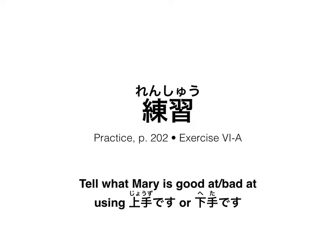Alright, let's get a little practice in. This is taken from page 202 in Genki. The setup here is we're talking about our friend Mary and discussing what she's good at or bad at using our new vocabulary words: jōzu, to be skilled at or good at something, and heta, to be bad at something.